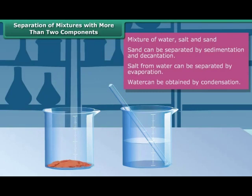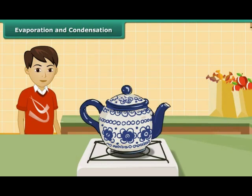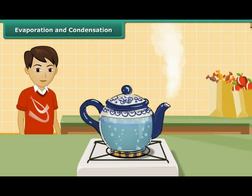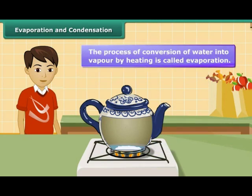Let us look at what we mean by these two terms. When we have a mixture of salt in water to separate, we take the solution in a kettle and cover it with a lid. Now gently heat the kettle for some time. Heating transforms water into vapor that escapes from the spout of the kettle. Continue heating till all the water gets converted into vapor and only salt is left behind in the kettle. This process of conversion of water into vapor by heating is called evaporation.